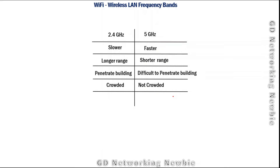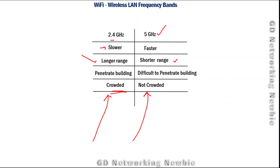Based on their frequency band, these standards have different characteristics. The 2.4 gigahertz band is slower in data rate but can cover longer distances and penetrate buildings more effectively. The 5 gigahertz band is faster but covers a shorter range and has difficulty penetrating buildings. The 2.4 GHz band is also more crowded since other wireless standards use the same frequencies, whereas the 5 GHz band is less crowded.